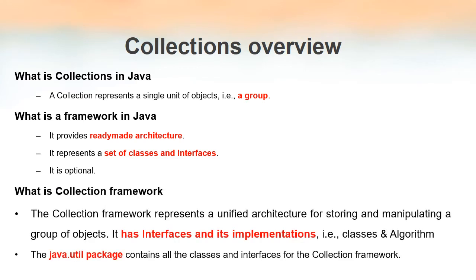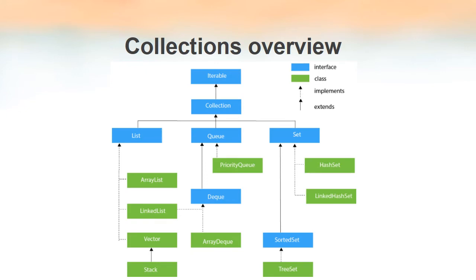When we group these two terms together — collections and framework — we get the collections framework. A collections framework is a unified architecture that provides us with several classes and interfaces that can be used for performing different operations. The collections framework has interfaces and the implementations of those interfaces. It is the Java.util package that contains all the classes and interfaces for the collections framework, so whenever we use the collections framework we have to import Java.util.